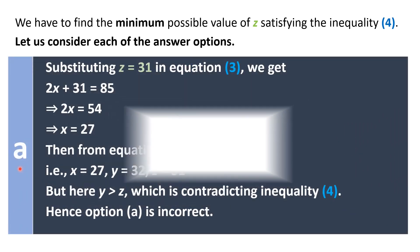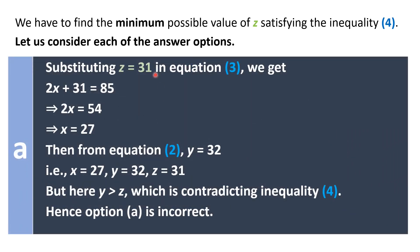Firstly, let us consider option A where Z equals 31. On substituting Z equals 31 in equation 3 which tells that 2X plus Z equals 85, we get 2X plus 31 equals 85. This implies that 2X equals 54, which in turn implies that X equals 27. Then from equation 2 which tells that Y equals X plus 5, we get Y equals 27 plus 5, that is 32.